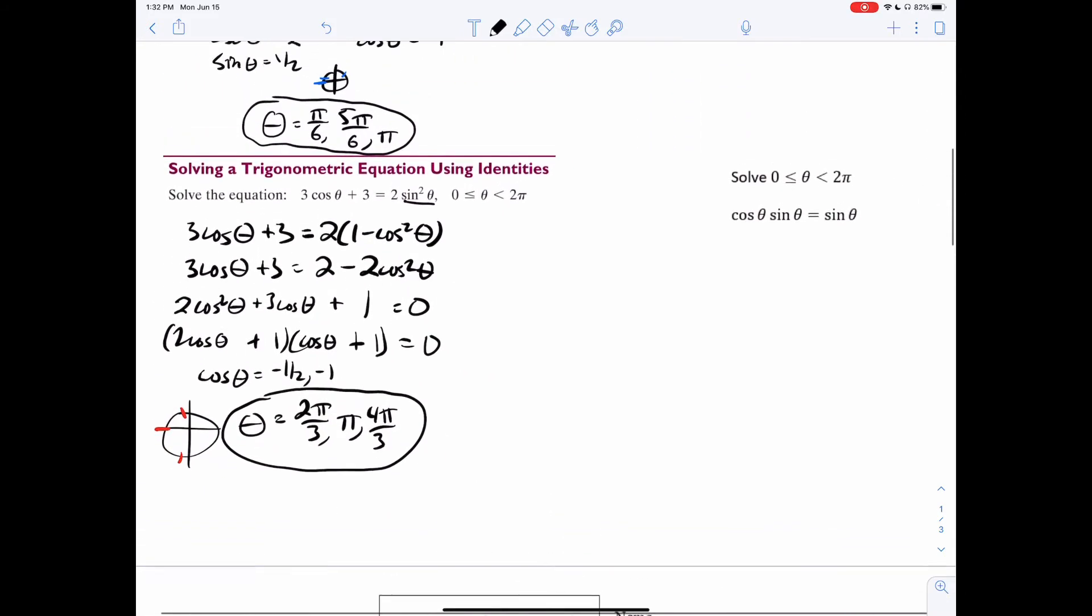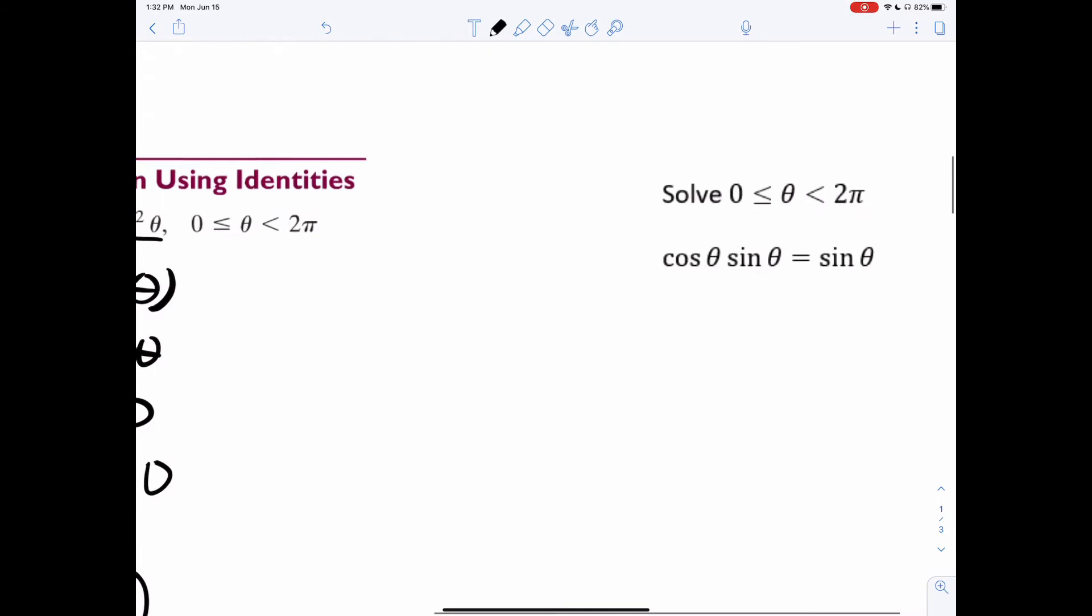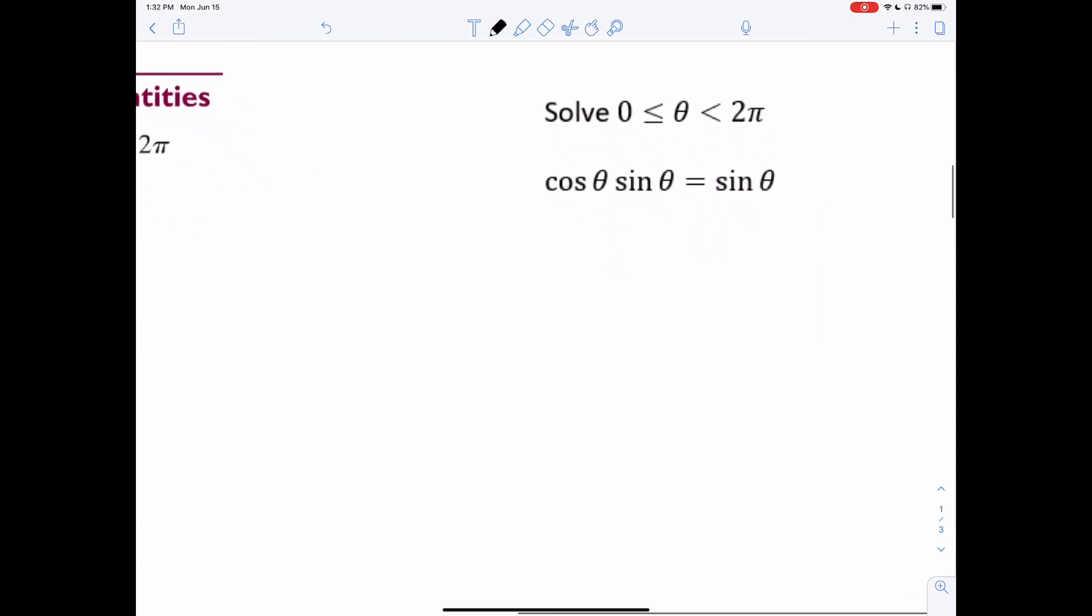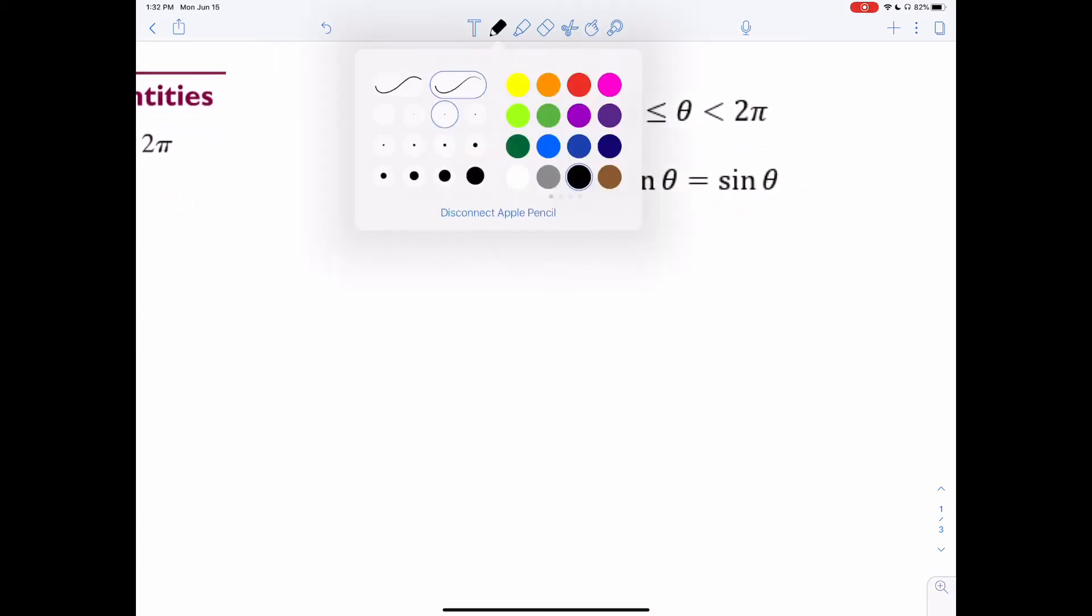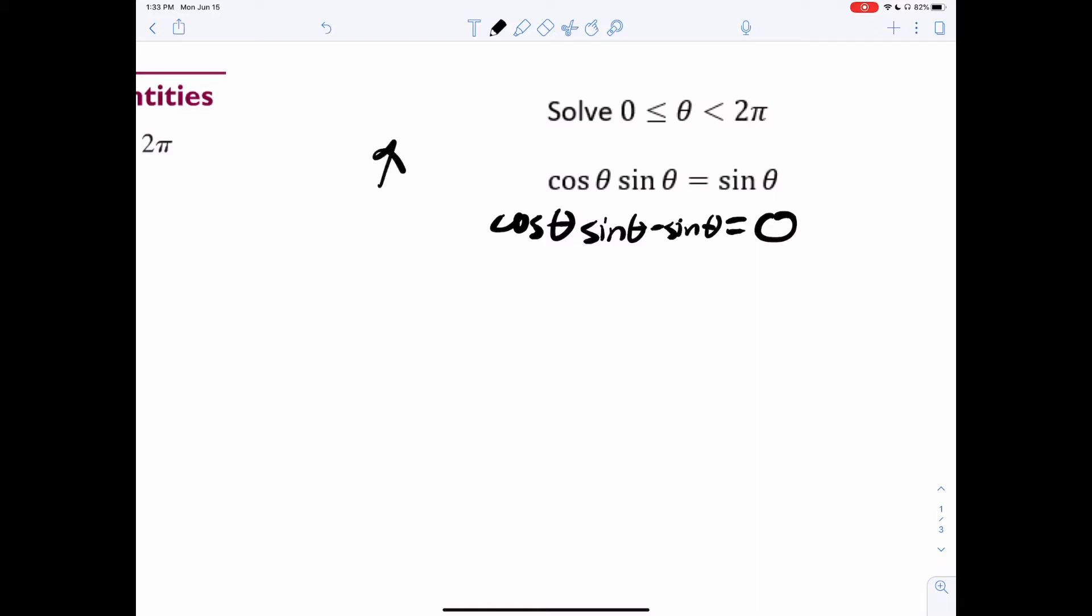Now go to our last example. Now this one, you want to make sure you fight your intuition because your intuition is going to tell you to divide both sides by sine. Do not do that. If you do that, you're going to miss some answers. So for this one, you always want to make it equal to zero. So you want to write this. Notice how I just subtract the sine theta. Once you do that, we have to factor.